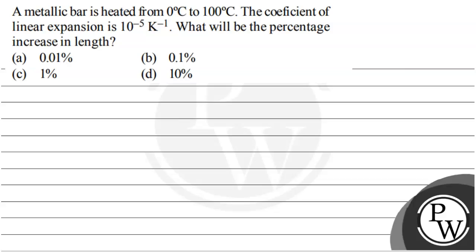The coefficient of linear expansion is 10 to minus 5 per Kelvin. What will be the percentage increase in the length? For this, option A is 0.01%, option B is 0.1%, option C is 1%, option D is 10%.